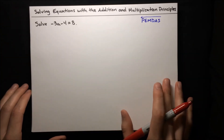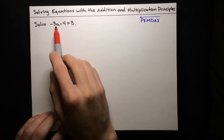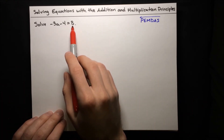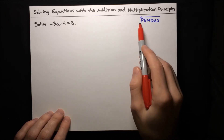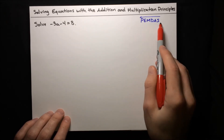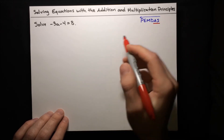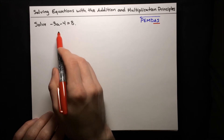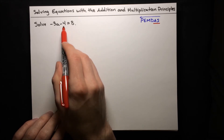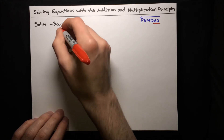Here's another example. We want to solve the equation negative 3a minus 4 equals 8. To do that, we're going to use our law of opposites, which is just PEMDAS in reverse. Starting out with addition and subtraction, let's separate the variable from the constant. On this side, we've got a variable, but we've also got a constant, and we need to get rid of it.